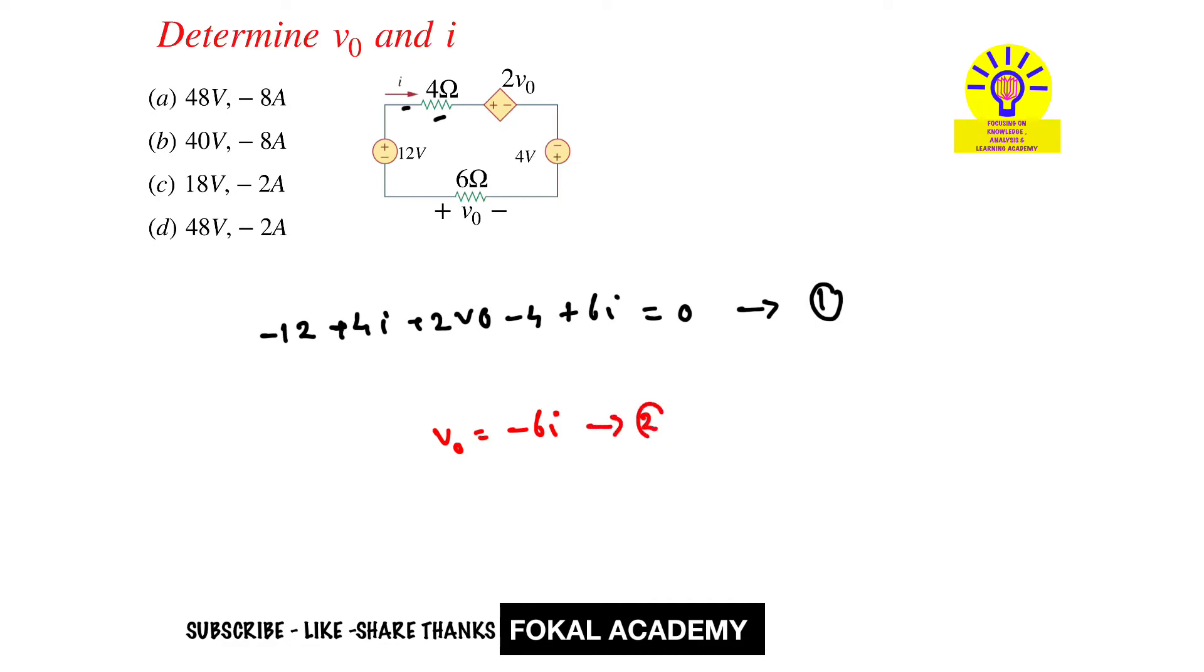Now substitute this equation two in equation one, then we get minus 16 plus 10i minus 2i equal to zero. So by simplifying this we get current i equal to minus 8 amperes.